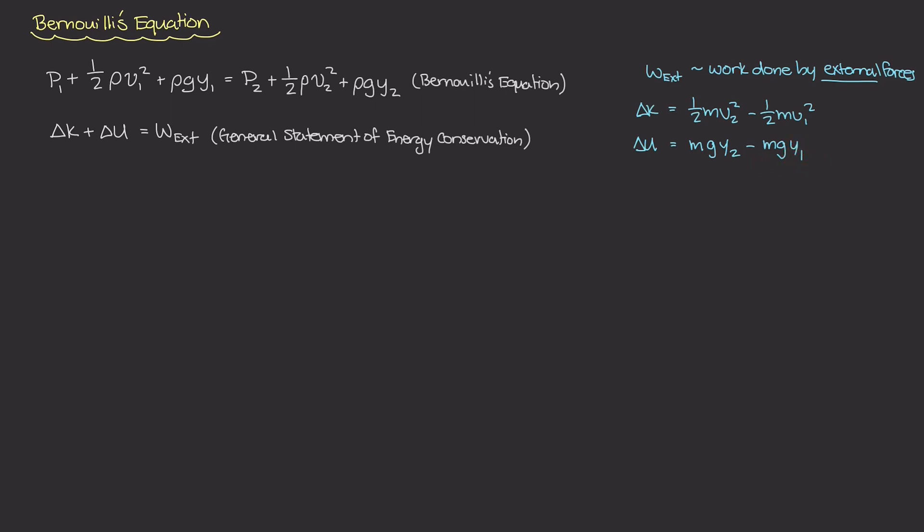g is the gravitational constant, and y is the distance from some datum up to that point. So let's go back to this equation right here. This equation really states that the change in total kinetic energy plus the change in total potential energy is equal to this external work.